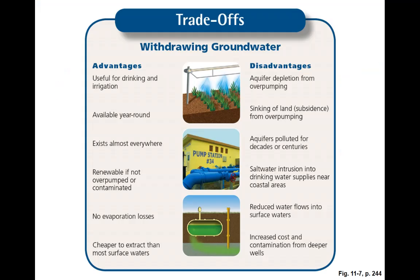So when we start thinking about withdrawing groundwater — when we start thinking about drilling wells and using this instead of surface water — what are the benefits? One, it's really useful for drinking and irrigation and available year round. We don't have to worry about frozen above-ground water or ice, and it exists almost everywhere. If it's not over-pumped or contaminated, we can use it as a renewable water source because it will be recharged by surface water. And because it's below ground, we don't see the evaporation that we do with surface water.